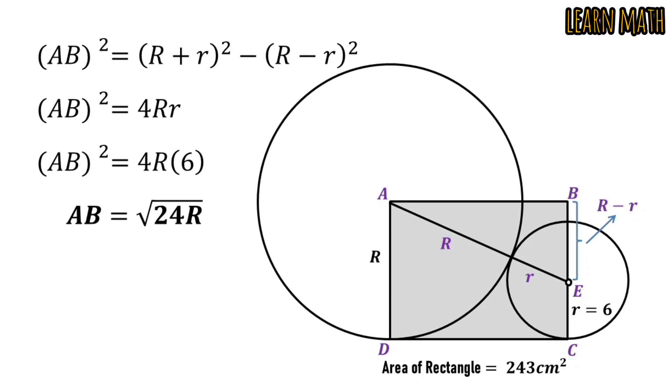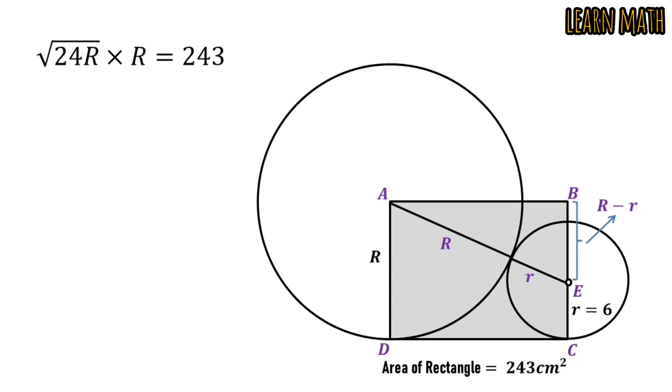Now, height of the rectangle is capital R and base of the rectangle is √(24R). So, we can write √(24R) × R is equal to 243 because area of the rectangle is equal to 243.